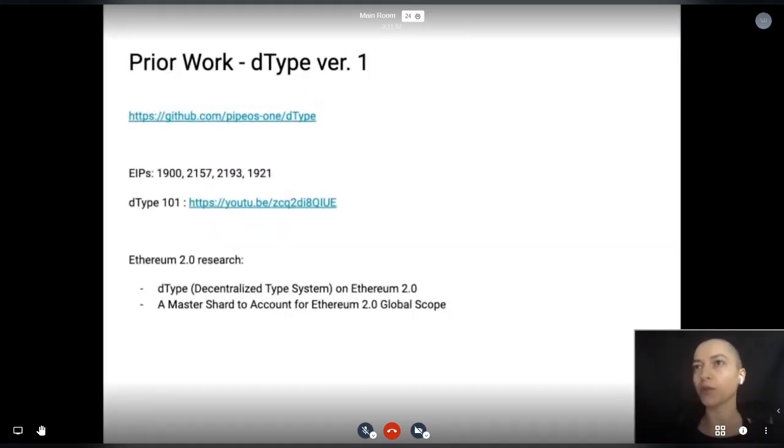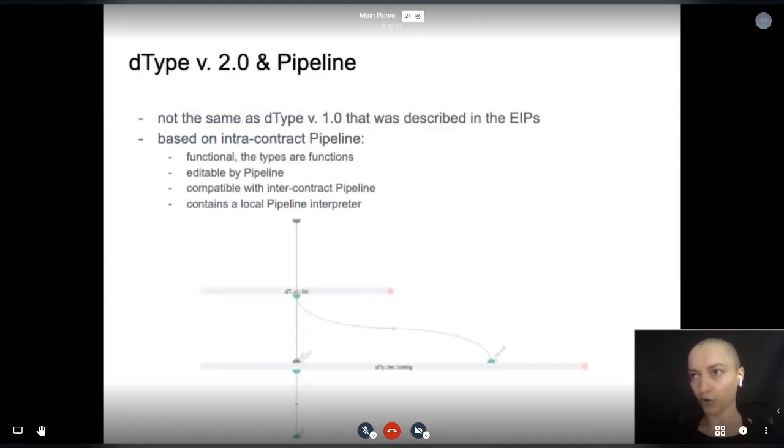Now dType version 2 is functional and it is built upon the knowledge that we gathered while building Pipeline, specifically the on-chain Pipeline graph interpreter that we now have live for testing. All types are now based on functions, so Pipeline itself can be an editor for creating new types. The new dType engine is actually a graph interpreter for functions residing in the same contract.